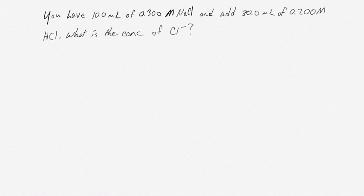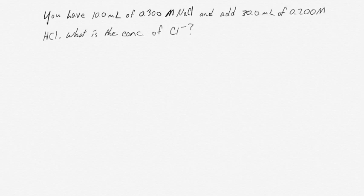Our third example is a little different. We have 10 milliliters of 0.3 molar sodium chloride solution, and we add to that 30 milliliters of 0.2 molar hydrochloric acid, and we want to know the new concentration of chloride ions after mixing. The big takeaway here is, again, track the moles — we're looking for the concentration of chloride ions, not the concentrations of those compounds.